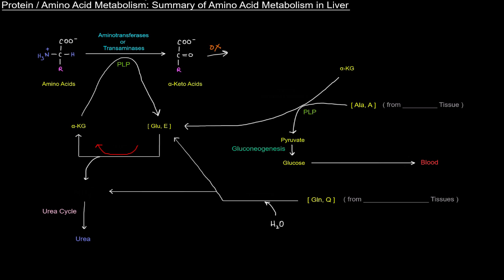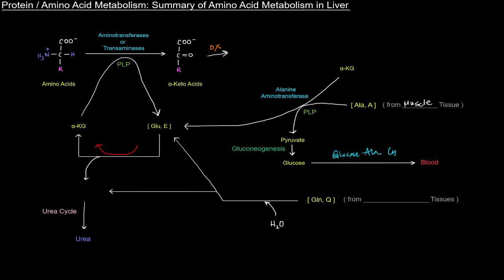Up here to the top right we've got another transamination reaction — the alanine aminotransferase reaction. The amino group attaching to alpha ketoglutarate to produce glutamate is coming from alanine, which of course is coming from muscle tissue. Alanine aminotransferase catalyzes that specifically. The pyruvate that results from that can of course in the liver go through gluconeogenesis to produce glucose, and that can be sent back to the blood in the glucose-alanine cycle — to send that glucose back into the muscle cells.